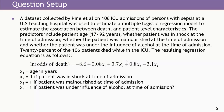Ultimately, 20% of these 106 patients died while in the ICU, and the resulting regression equation relating the log odds of death to some of these predictors looks like this. The log odds of death equals intercept negative 8.6, plus 0.08 times age in years, plus 3.7 times an indicator of whether they were in shock at admission, plus 0.8 times an indicator of malnutrition, plus 3.1 times an indicator of alcohol influence at admission.